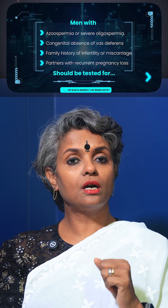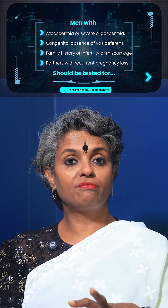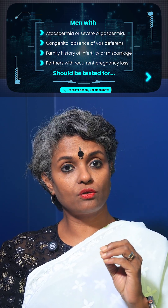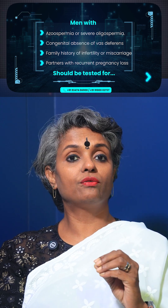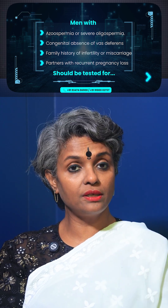So what are the recommendations? Azoospermia or severe oligospermia, congenital absence of the vas deferens, or a family history of infertility or miscarriage — partners with recurrent pregnancy loss should be tested, including karyotyping.